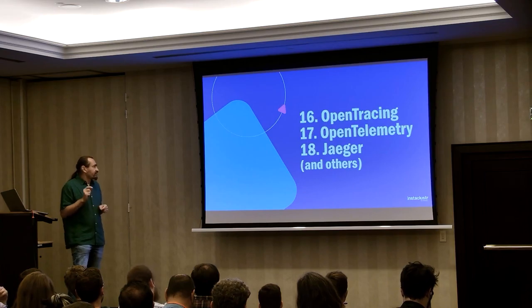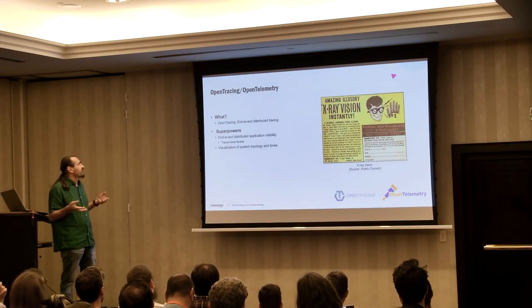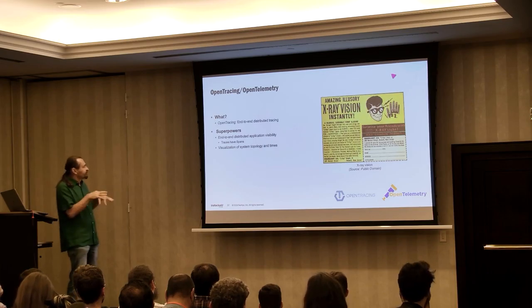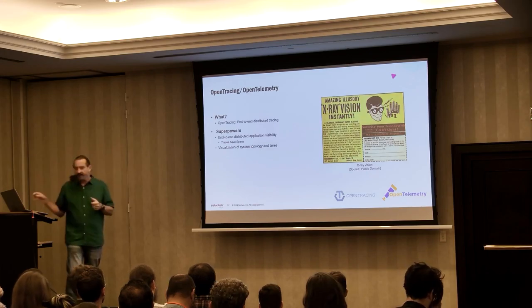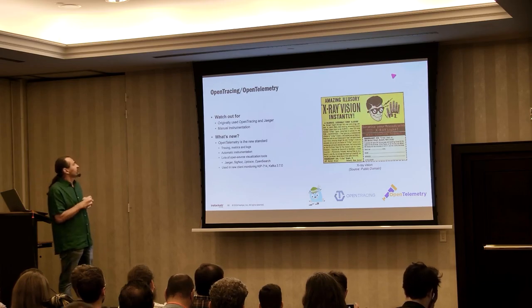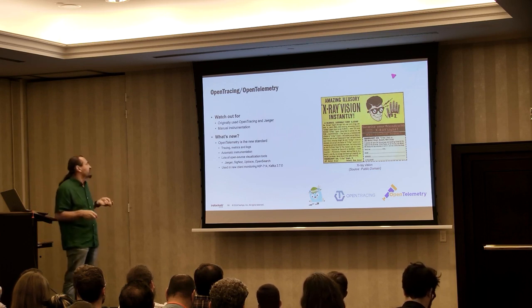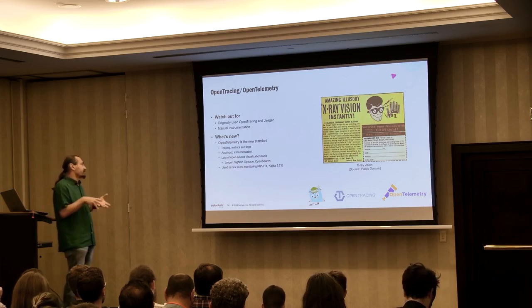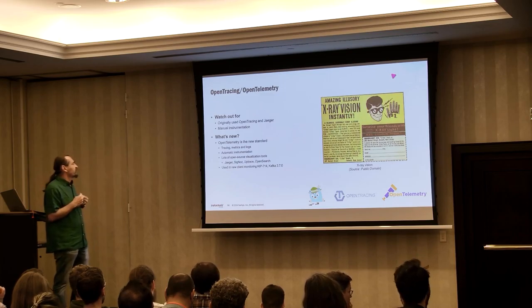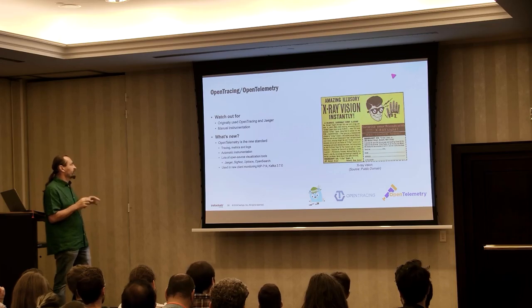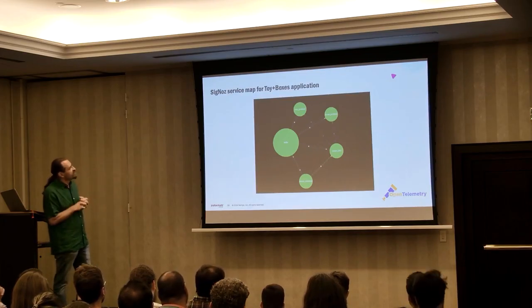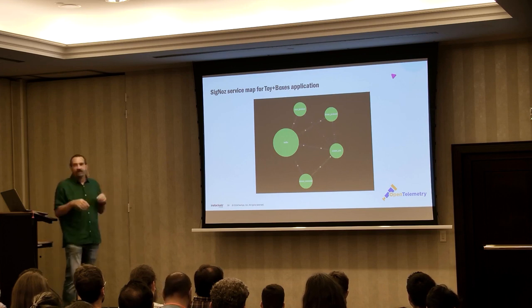Numbers sixteen and seventeen: Open Tracing and Open Telemetry. Open Tracing is end-to-end distributed tracing — it gives end-to-end distributed application visibility using traces and spans, and a visualization of system topologies and time spent in each system. I was originally using Open Tracing and Jaeger, which required manual instrumentation. What's new: Open Telemetry is the new standard for tracing, metrics, and logs. It has automatic instrumentation, at least for Java, and lots of open-source visualization tools. It will be used for the new client monitoring in Kafka as well. One GUI tool I tried recently is Signoz, which gives a nice view of all the different components.